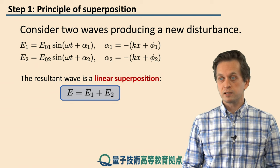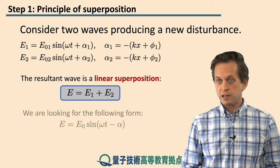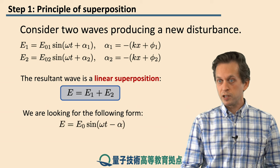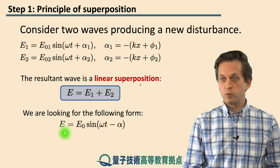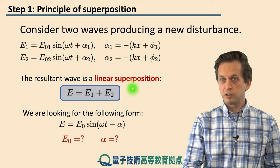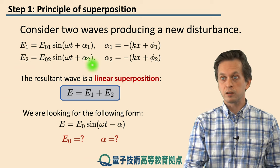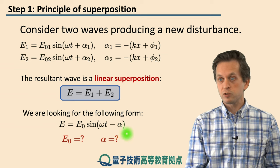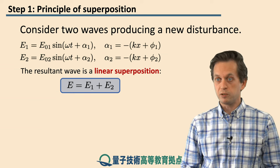And this is known as the principle of superposition. And the idea is that we are looking for a description of the new resultant wave also in this form, where now we have to find out what is this new amplitude E₀ in terms of the composite waves. And also we want to find out this new factor of alpha. So let's see how we can do that.